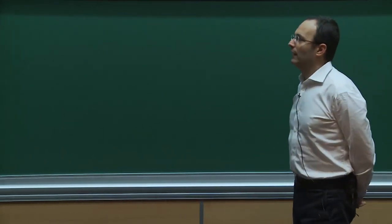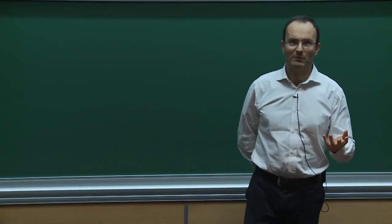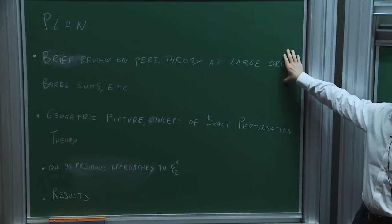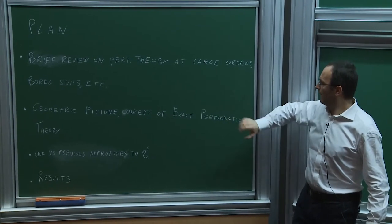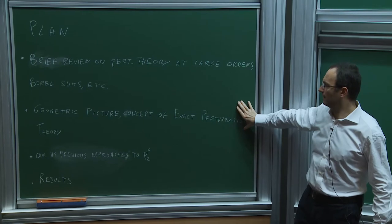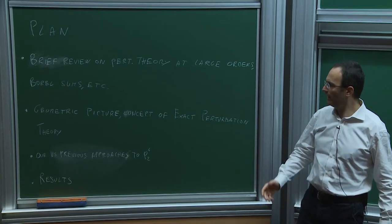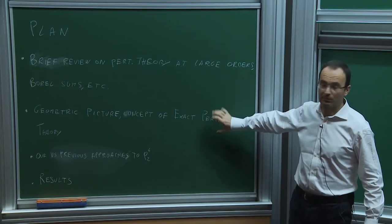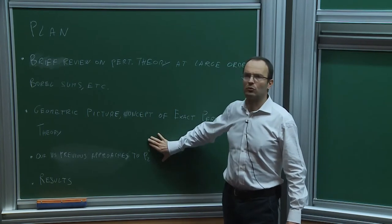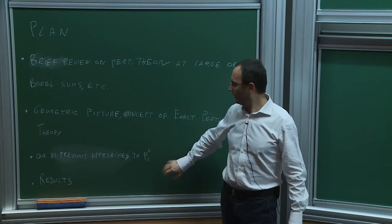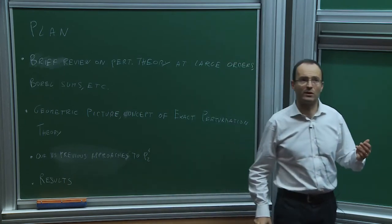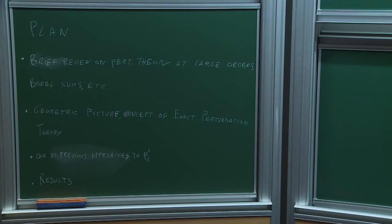Then I will show how you can take a geometric picture to this problem — this is a bit of history, just the basic facts known since decades. Then the geometric picture is something which came out more recently, and the concept of exact perturbation theory very recently. Based on this geometric approach, I'll show how to do computations: computing loops in φ⁴ and then resumming, and how our approach differs from previous historical approaches to the same problem.